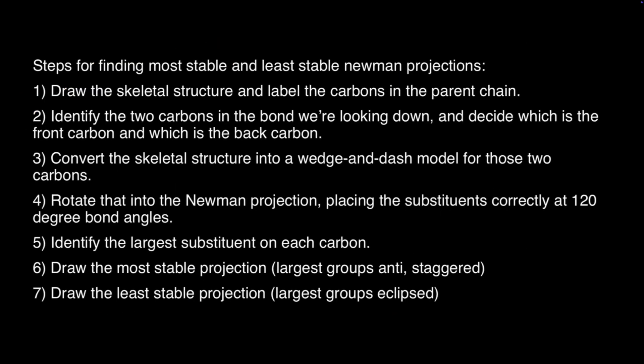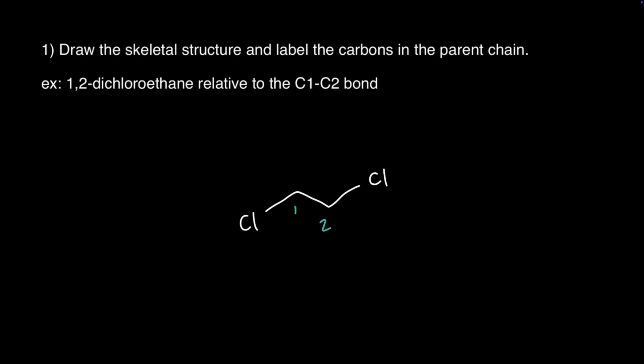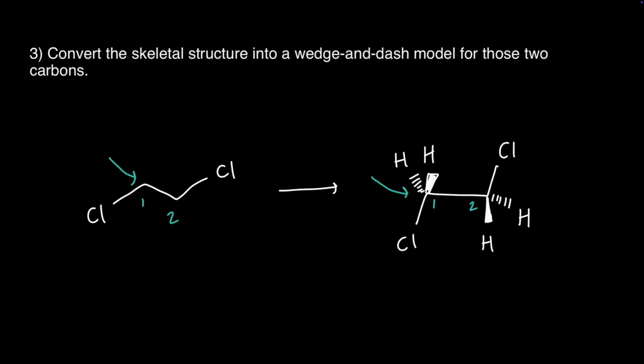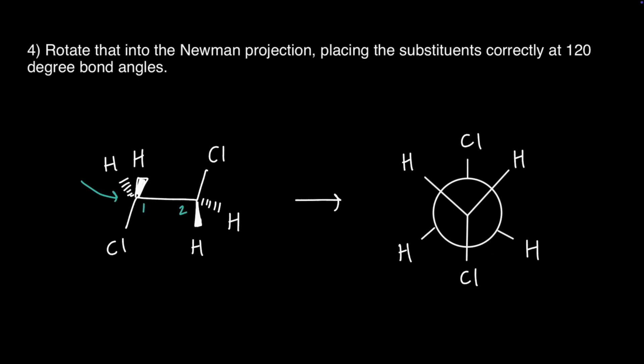The steps we'll follow for every problem are the same. First, draw the skeletal structure and label the carbons in the parent chain. Then identify the two carbons in the bond we're looking down and decide which is in the front and which is in the back. Convert the skeletal structure into a wedge and dash model for those two carbons. Then rotate that into the Newman projection, placing the substituents correctly at 120 degree bond angles.